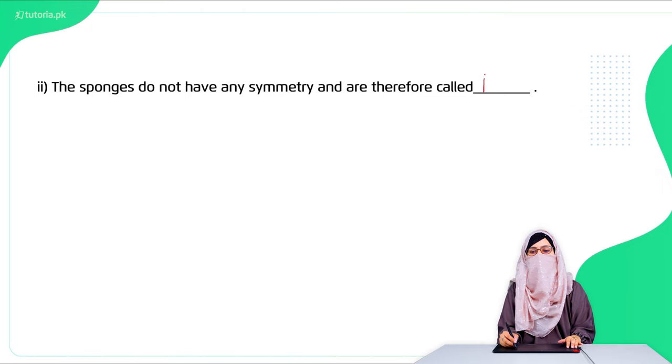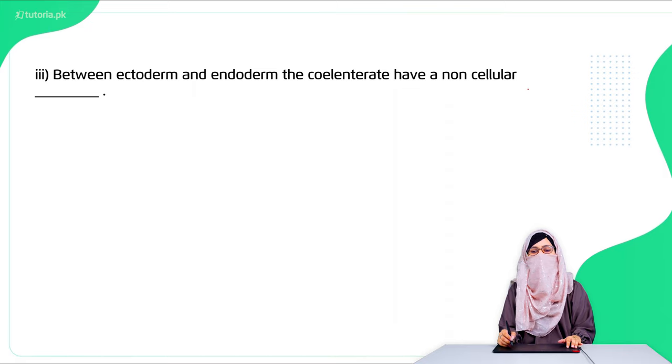Third: between ectoderm and endoderm, the coelenterates which we call the cnidarians have a non-cellular mesoglea.